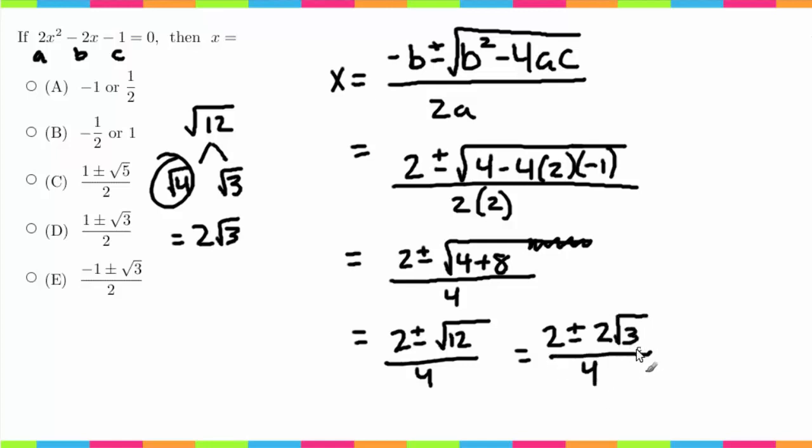So now I'm going to get 2 plus or minus 2√3 over 4. Now I can simplify this by a factor of 2. If I took a 2 out of the top, this would become 1 plus or minus √3 over 2 times 2, and now these can cancel. So our final answer becomes 1 plus or minus √3 over 2.